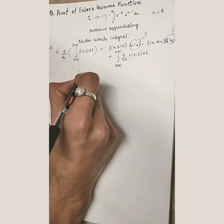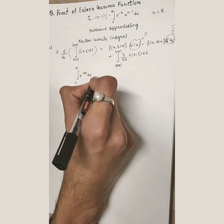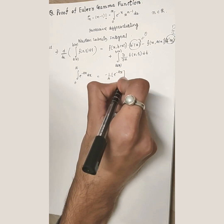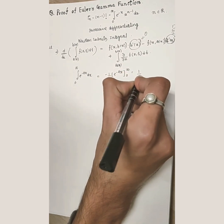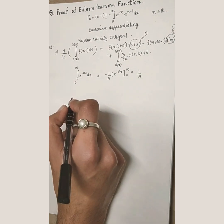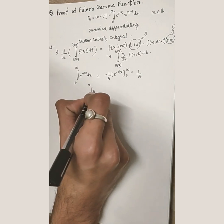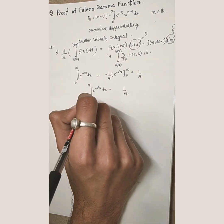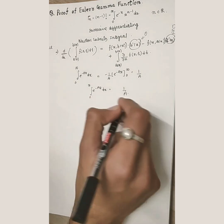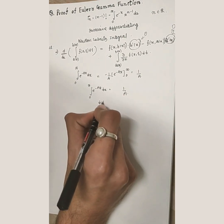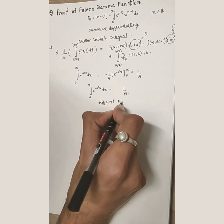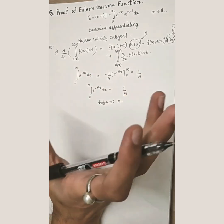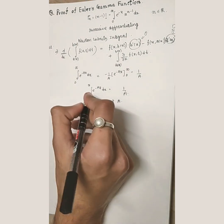Let's start. I take the function e^(−ax) and integrate it from 0 to infinity. The integral is straightforward: it gives −(1/a) · e^(−ax) from 0 to infinity, which on substituting the limits gives 1/a. So the integral from 0 to infinity of e^(−ax) dx = 1/a. Now I differentiate both sides with respect to a.